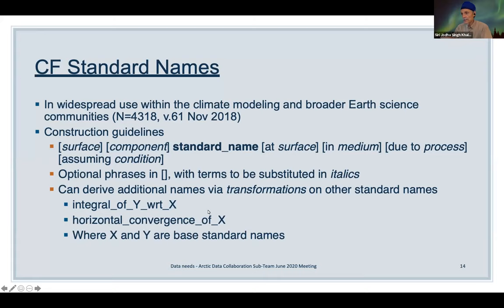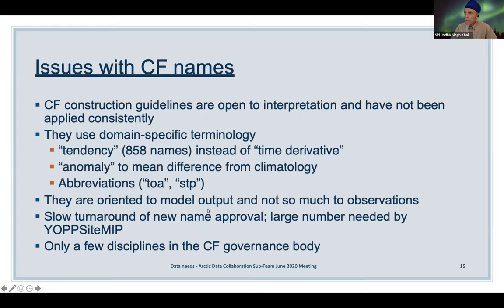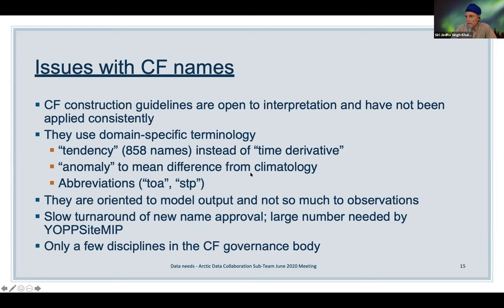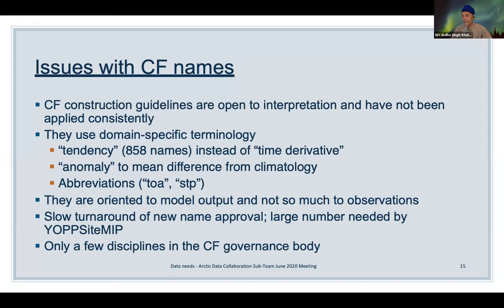CF standard names have a form for constructing names but are open to interpretation. They use domain-specific terminology like 'tendency' for time derivative, or 'anomaly' to mean difference from climatology — things not necessarily understood outside the numerical weather prediction domain. They have been more historically oriented toward model output, not so much to observations. The OPSITE NIP has many variables that are not in the current CF standard names.